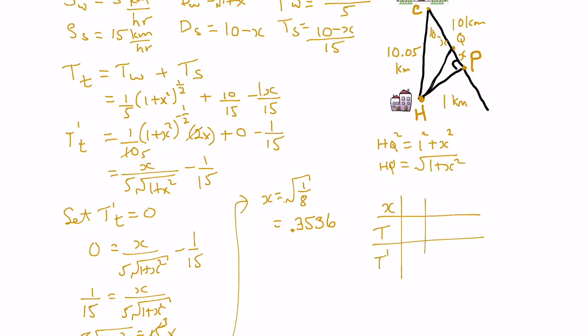So our extremes again were as if x was 0, that means that we're actually right at point P, x being 0, so that would be like our scenario where we said to walk from H to P and then take the subway from P into campus.